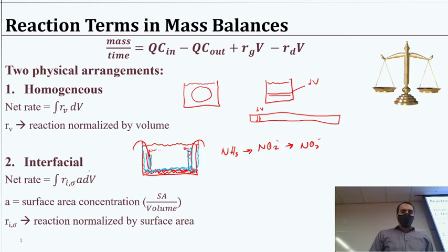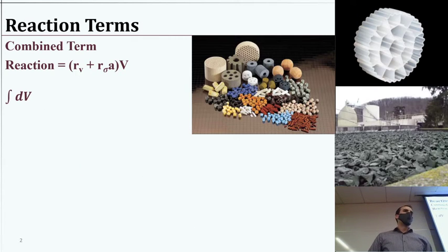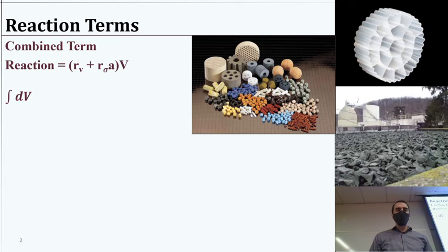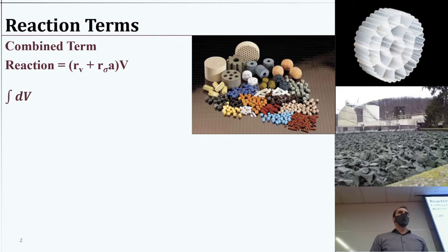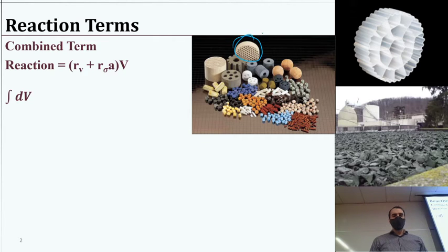This is slightly more complicated because we have A — the surface area concentration, that surface area per volume — giving indication of the available reaction space. If we have a volume of gravel, it has some given surface area per volume. Just the tank walls alone would be a lot lower surface area. Depending on what we put in, this surface area concentration term A can be larger or smaller, essentially defining the space in which the reaction is happening.